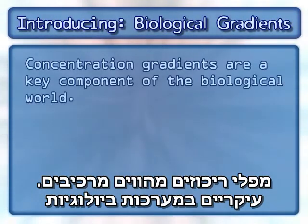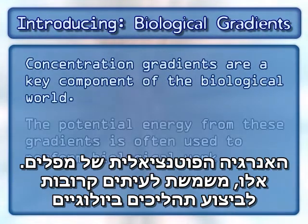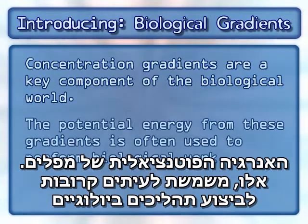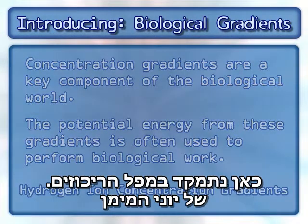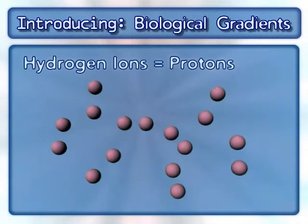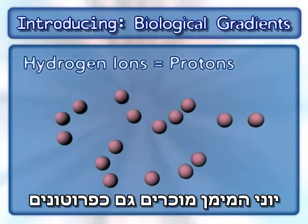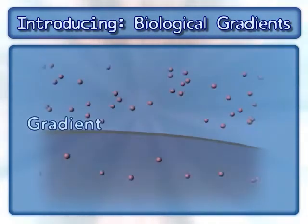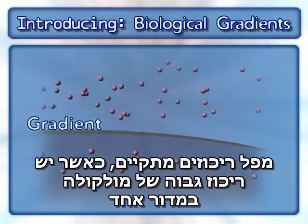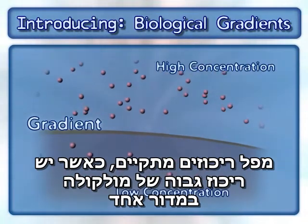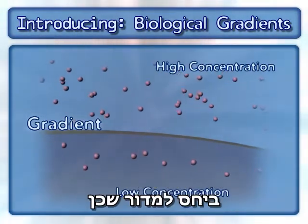Concentration gradients are a key component of the biological world. The potential energy from these gradients is often used to perform biological work. Here we will focus on hydrogen ion concentration gradients. Hydrogen ions are also known as protons. A gradient exists when there is a higher concentration of a molecule in one compartment compared to a neighboring compartment.